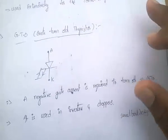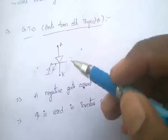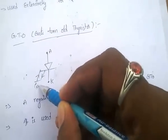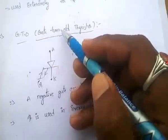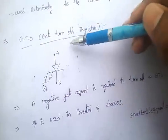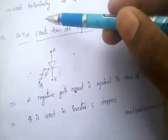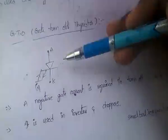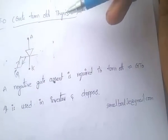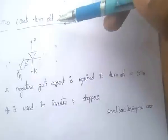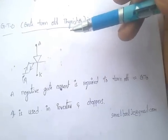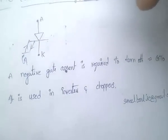GTO — Gate Turn Off thyristor. A negative gate current is required to turn off a GTO. It is used in inverters and choppers.